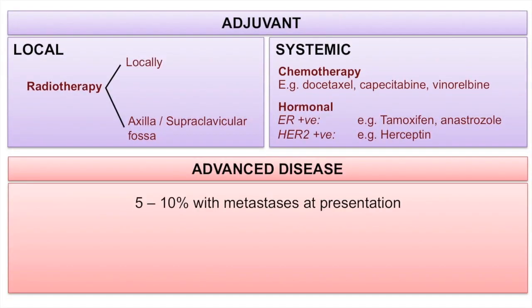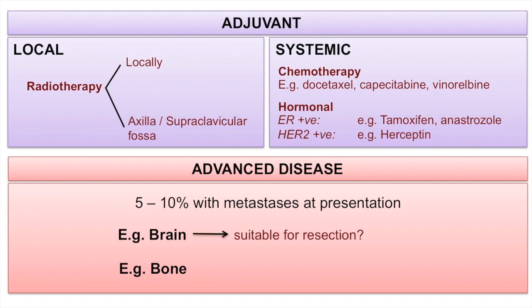Five to ten percent of patients have metastases when they present. Breast cancer has a particular tendency to metastasise to bone and brain. In certain patients with limited brain metastases, resection may be offered. In patients with bone metastases, the treatment is radiotherapy and bisphosphonates.